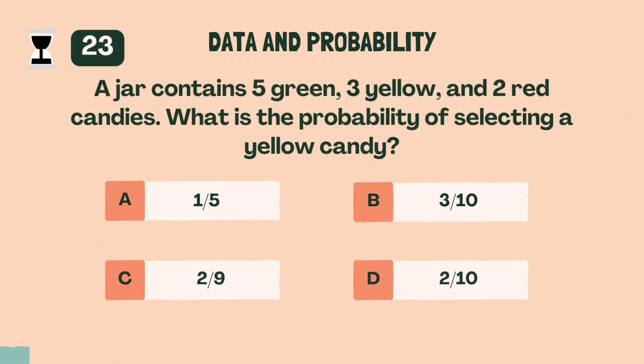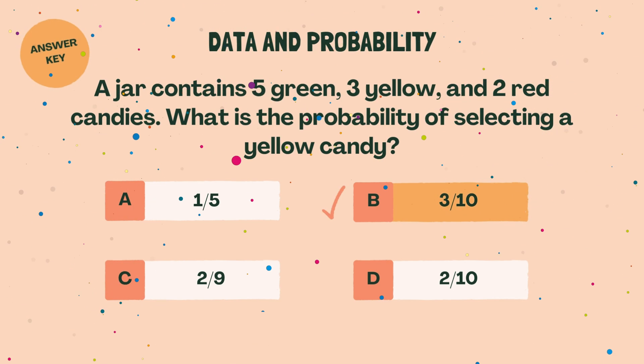A jar contains five green, three yellow, and two red candies. What is the probability of selecting a yellow candy? B, three-tenths.